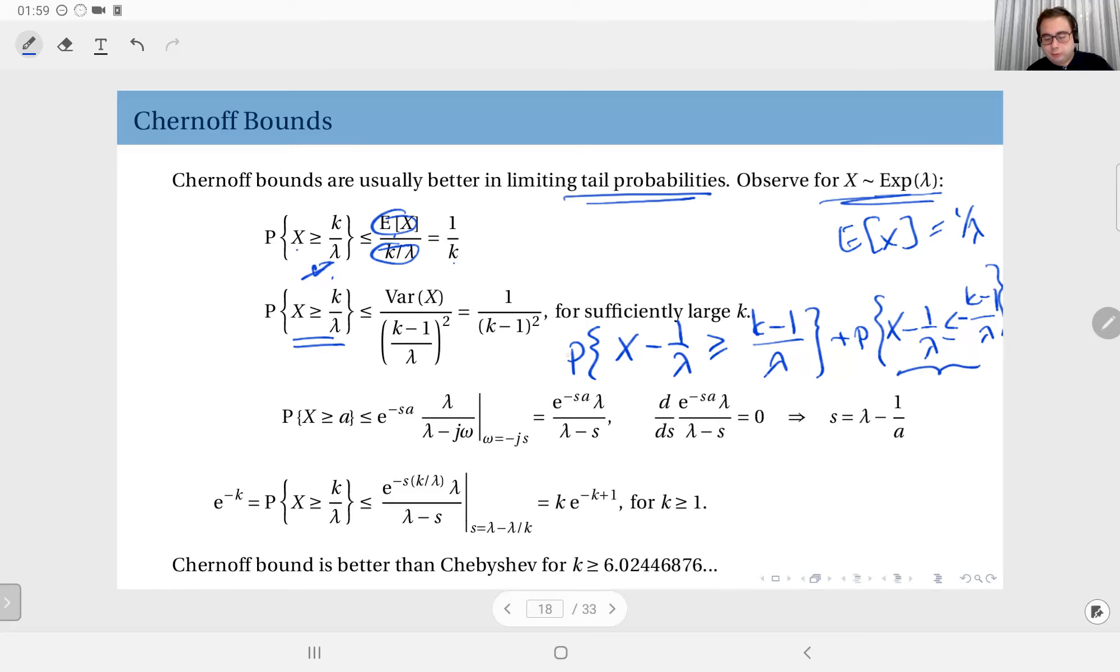But then, when I write it in this way, this event equals this. So now I can write this as the probability that absolute value of X minus 1 over lambda exceeds k minus 1 over lambda.